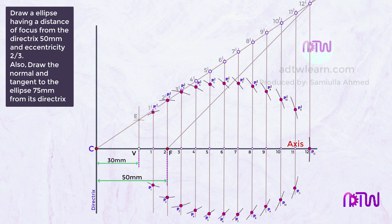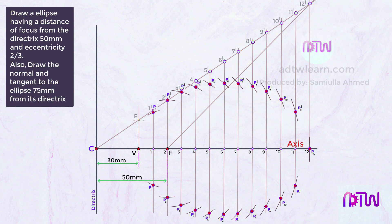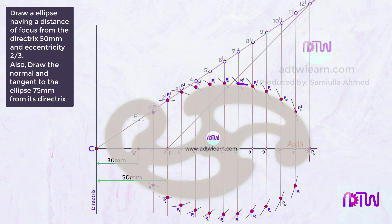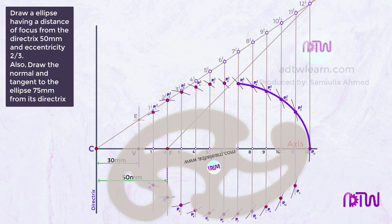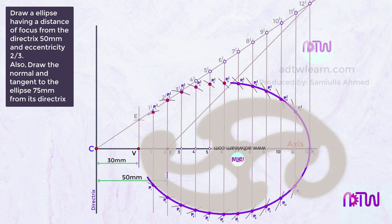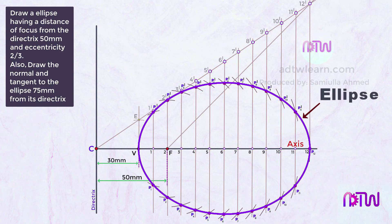After getting all the P points, draw a smooth curve passing through them to obtain the ellipse. Use French curves to draw it, making sure all points are touching the French curve. This is the final ellipse drawn using the eccentricity method.